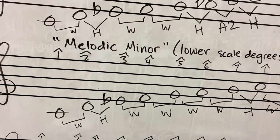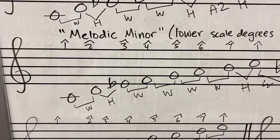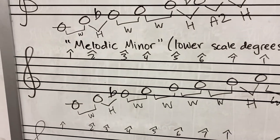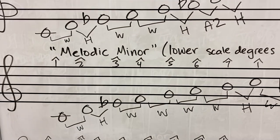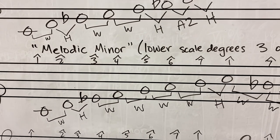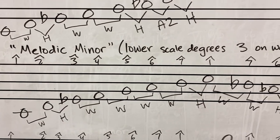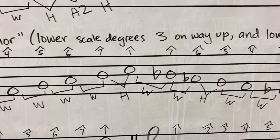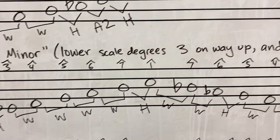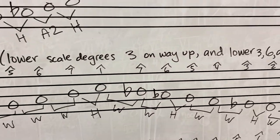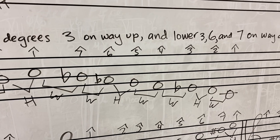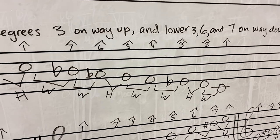The third minor scale is called the melodic minor. This is an interesting scale because it sounds different — different notes are altered depending on whether you are ascending or descending. On the way up, we lower scale degree 3. On the way down, we lower scale degrees 3, 6, and 7.